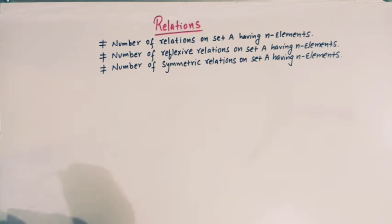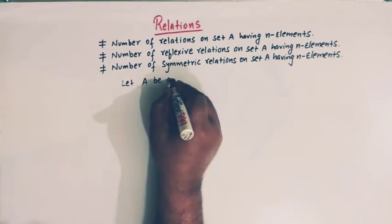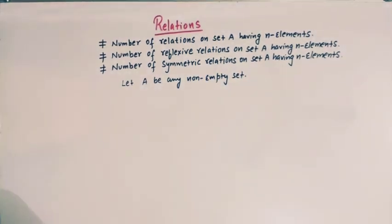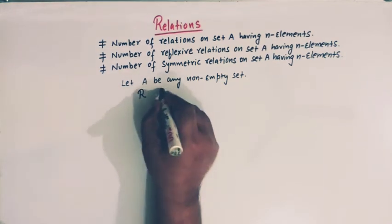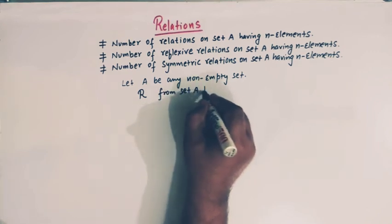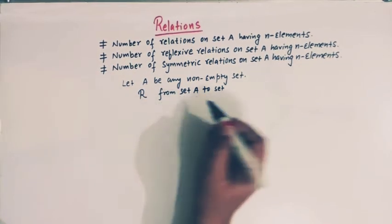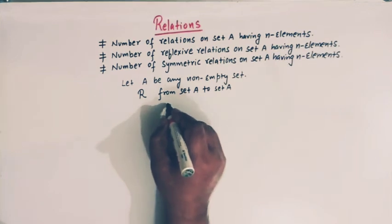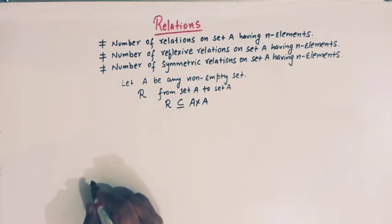Let A be any non-empty set. We know that a relation R from set A to set A is a subset of A cross A. So R is a subset of A cross A — this is the definition of a relation.